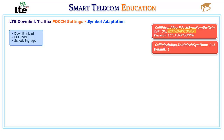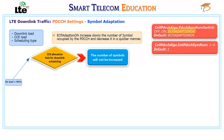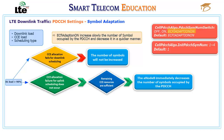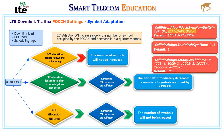Compared with the ON setting, ECFI Adaptation ON enables the number of symbols to increase more slowly and decrease more quickly. When downlink load is greater than 90%, the number of symbols will not be increased if CCE allocation fails for downlink scheduling. When downlink load is greater than 90% and uplink CCE allocation failure does not occur during the previous TTI with sufficient remaining CCE resources, the eNodeB immediately decreases the PDCCH symbols. The threshold for determining whether remaining CCE resources are sufficient is specified by the CFI Adjustment CCE threshold parameter.